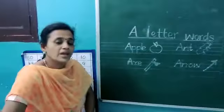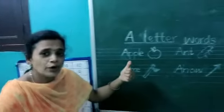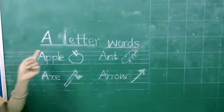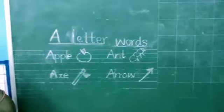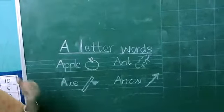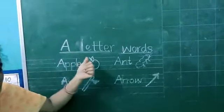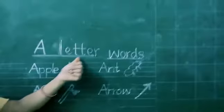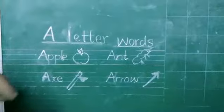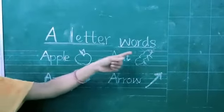Okay kids, come on. Next, move on to the written part. Yes kids, everybody look at the word. See here. I have written A letter words. First, everybody read the heading — see here: A letter words. All of you read the heading, come on: A letter words.